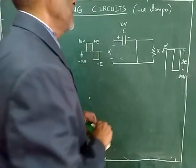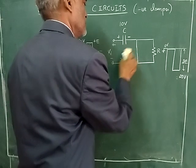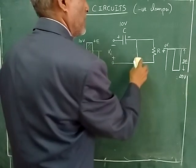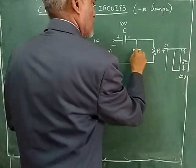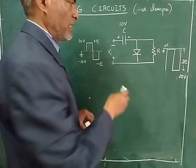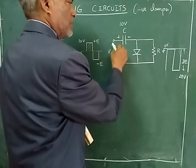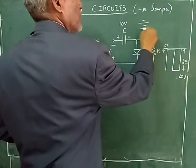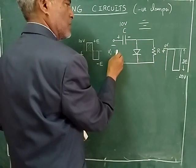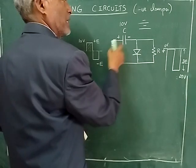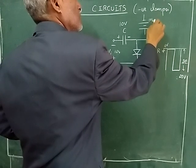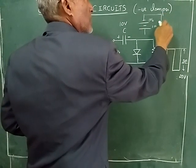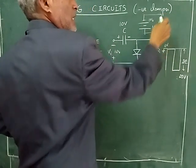Now let's see the negative half cycle. In this case, this end is negative and this end is positive. We have to check the behavior of the diode carefully. The source gives minus 10 volts and the capacitor has 10 volts — so we have plus, minus, plus, minus. These two act like two cells in series: 10 volts from the source and 10 volts from the capacitor, with the negative end connected to the diode through the resistor. The diode is now reverse biased.